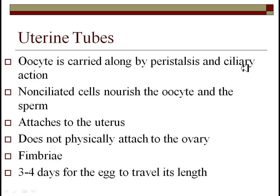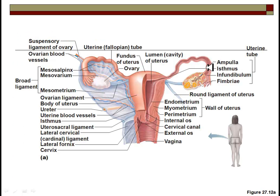The oocyte is carried down the fallopian tube by peristalsis as well as ciliary action — swept by cilia and rhythmic contraction of smooth muscles. Non-ciliated cells in the fallopian tubes nourish the egg as well as any sperm present. The tube attaches to the uterus but not to the ovary. Typically it takes three to four days for the egg to travel all the way down into the uterus. The ampulla is the wide portion where fertilization normally occurs, and the isthmus is the narrow region before the uterus where the egg will implant.